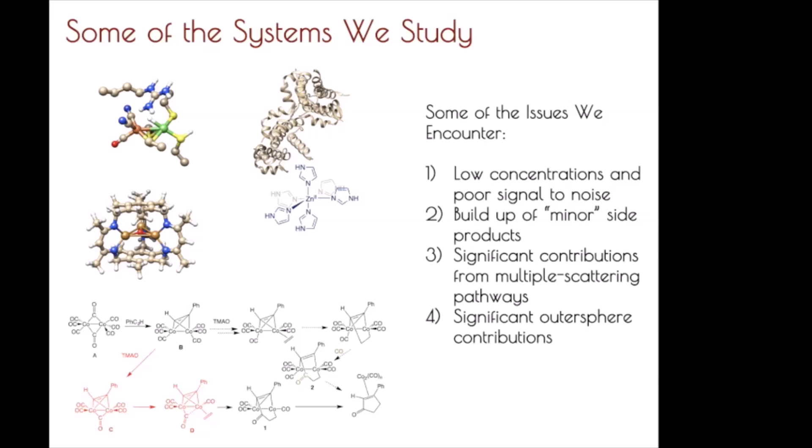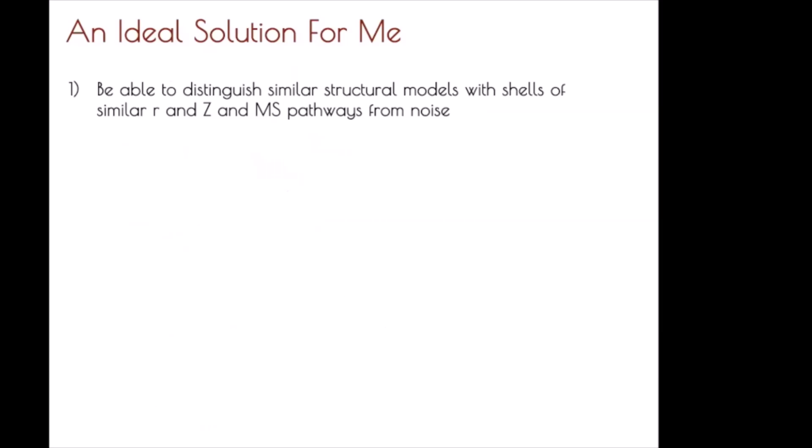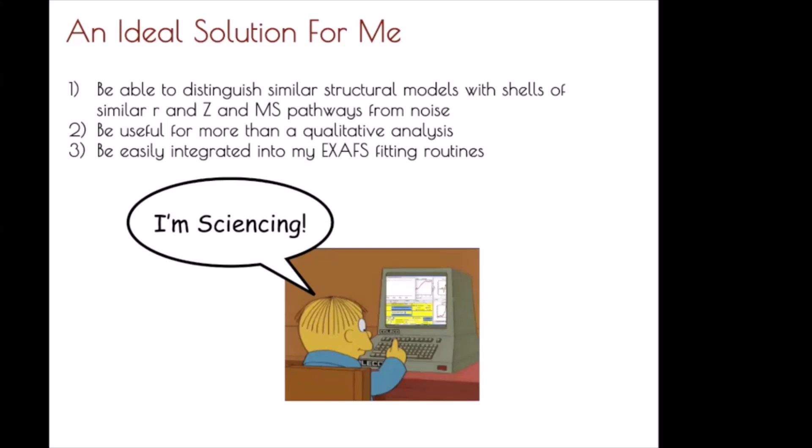For me, an ideal solution would be to distinguish between similar structural models with shells of similar distance and atomic weight, to be able to distinguish multiple scattering pathways from noise, and to have an analysis that we can actually extract quantitative structural information from — not simply see that one looks better than the other. Most importantly for us, since we don't really write code to any great extent, it needs to easily integrate into our existing XAFS fitting routines.